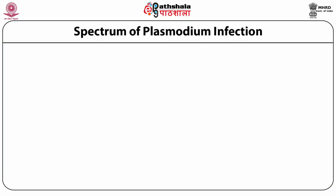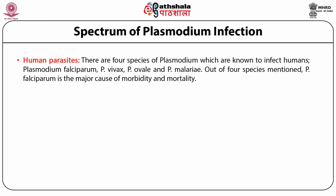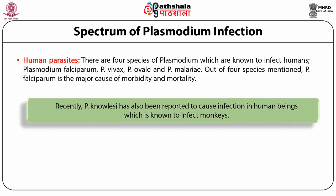A spectrum of Plasmodium infection: there are more than 120 species of Plasmodium, of which those known to infect humans are Plasmodium falciparum, Plasmodium vivax, Plasmodium ovale, and Plasmodium malariae. Out of these four species, Plasmodium falciparum is the major cause of morbidity and mortality. Recently, Plasmodium knowlesi has been reported to cause infection in human beings, though it is known to infect monkeys.